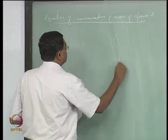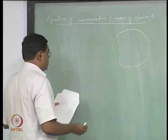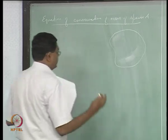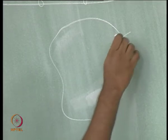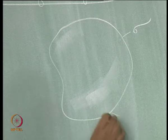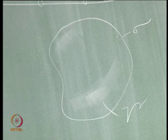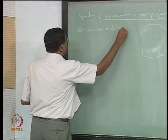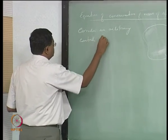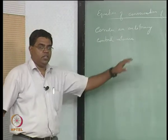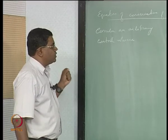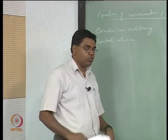To do this, we consider an arbitrary control volume. The surface is denoted by sigma and the volume itself by script V. The arbitrariness of the control volume is important because it makes the derivation quite general — we will invoke this arbitrariness to simplify the equations shortly.